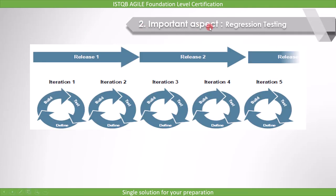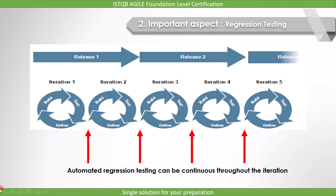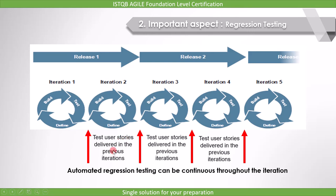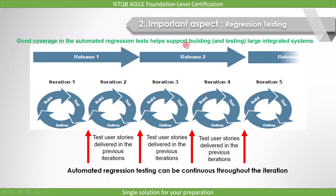Another important aspect of continuous integration is regression testing. Automated regression testing can be continuous throughout the iteration. Good automated regression tests cover as much functionality as possible, including user stories delivered in the previous iterations. Good coverage in the automated regression tests helps support building and testing large integrated systems. When regression testing is automated, agile testers are freed to concentrate their manual testing on new features, implemented changes, and confirmation testing of defect fixes.